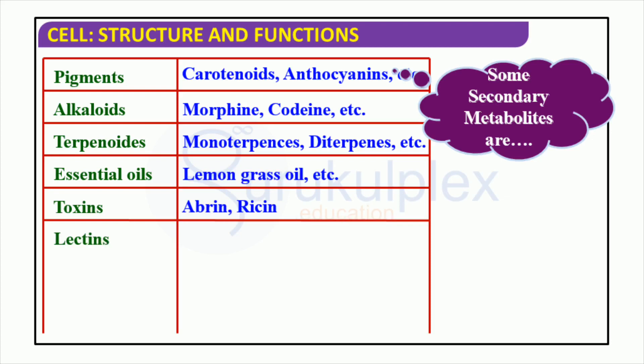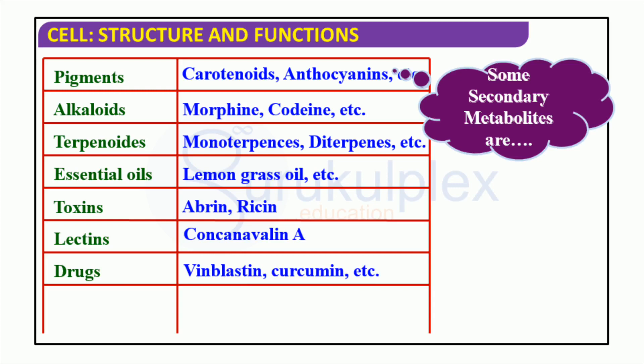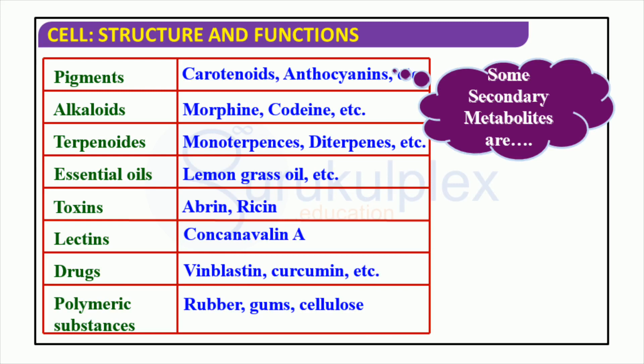Alkaloids include popular compounds such as morphine and codeine. Terpenoids can be split into distinctive categories like monoterpenes and diterpenes, with lemongrass oil as one example. Toxins contain abrin and ricin, whilst lectins like concanavalin possess remarkable healing qualities. Moreover, carotenoids, anthocyanins and other molecules such as vinblastine and curcumin may also be utilized as drugs. Knowing the variety of biochemically active molecules available can help us create treatments for various diseases.